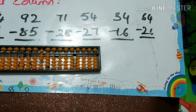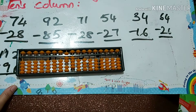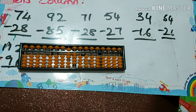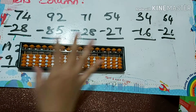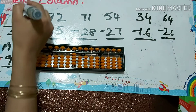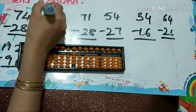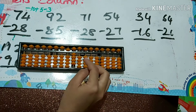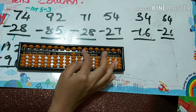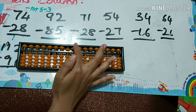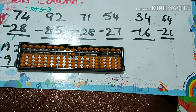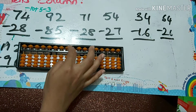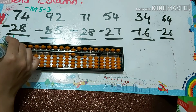First question: 74 minus 28. So minus 2 we can do directly. Next we must do minus 8. The formula: minus 10 plus 5 minus 3. So I'm doing plus 5 minus 3 here. Next I have to do minus 10, so minus 50 plus 40. Answer is 46.